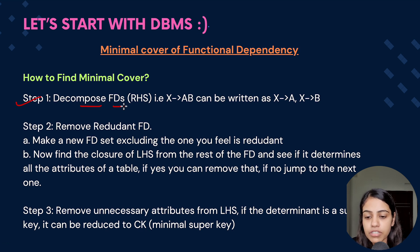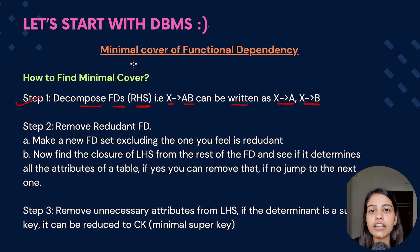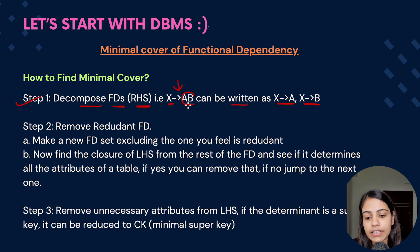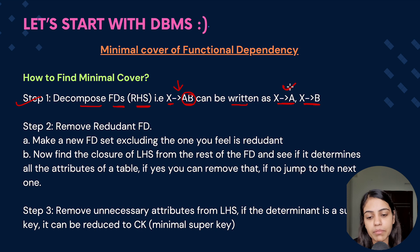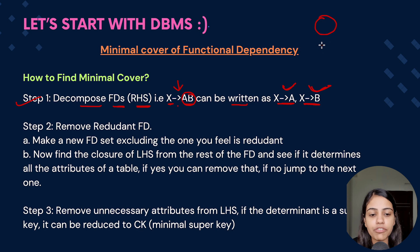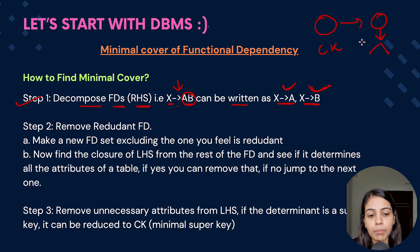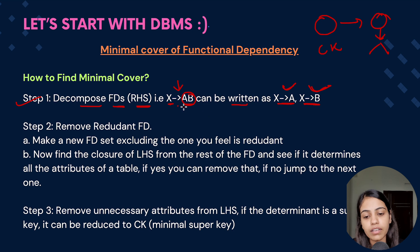Now let's see how we can find the minimal cover of a functional dependency. Step one is we have to decompose the functional dependency on the RHS. If X determines AB, it can be written as X determines A and X determines B, so that we can know which functional dependencies are redundant. From the rule of decomposition, if the RHS has a combination of attributes it can be decomposed, but the LHS cannot be broken because that combination is acting as the determinant.